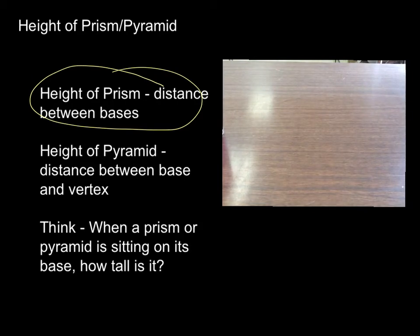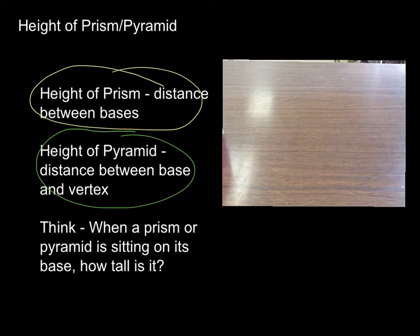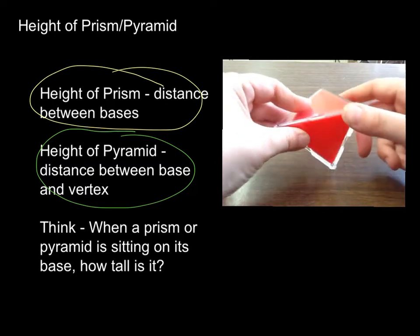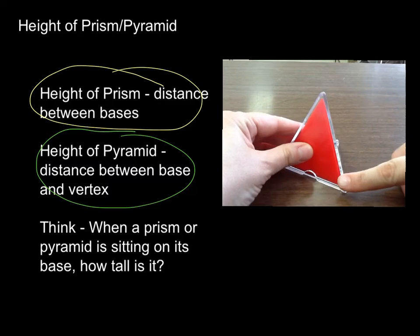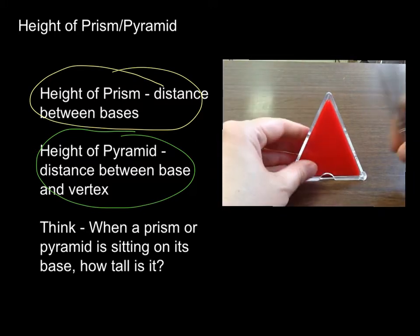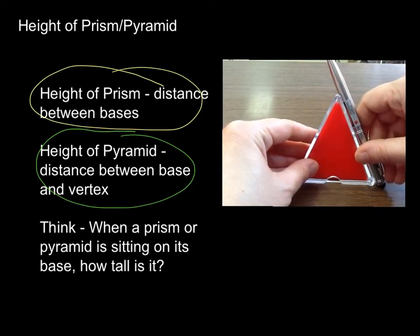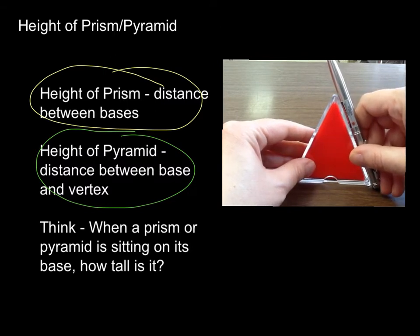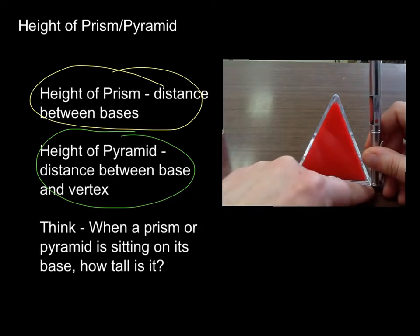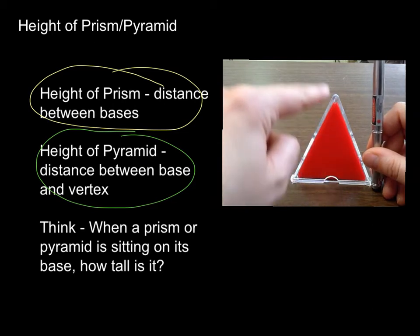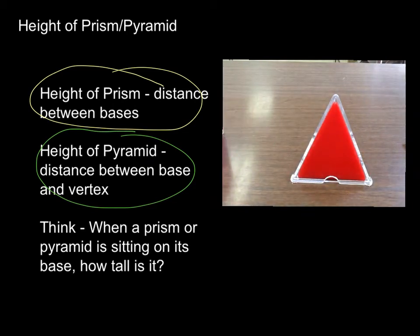Now for a pyramid, the height is going to be the distance between the base and the vertex. So if I have this pyramid right here, here is my base and here is my vertex. How tall is it from base to vertex? What's important is that you don't look at the slant — we don't measure someone when they're not standing straight up. So there has to be that right angle. It's really the distance from here to right here, from the base to the vertex, and you still have to have that right angle.